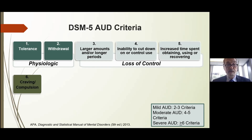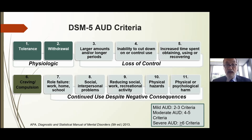A new criterion added in DSM-5 is craving — a compulsion to use. You have to ask the patient directly. The last five criteria fall under continued use despite negative consequences: role failure at work, school, or home; social or interpersonal problems; reducing recreational activities; physical hazards like driving under the influence; and physical or psychological harms. Severity of alcohol use disorder is measured based on the number of positive criteria.